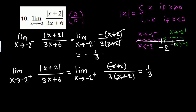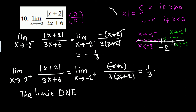The left-hand limit is negative one third and the right-hand limit is one third. Since they are different, the limit does not exist. So the limit of the original expression does not exist. You can graph this function and see, but it's clear from this algebra.